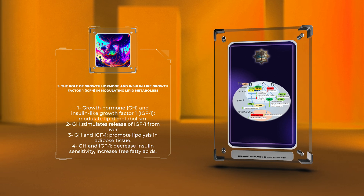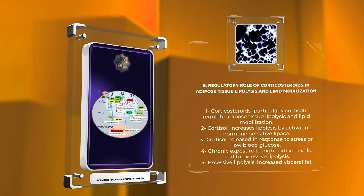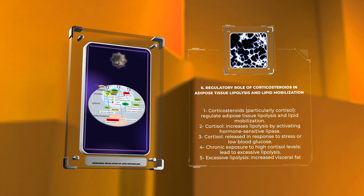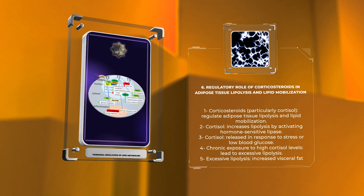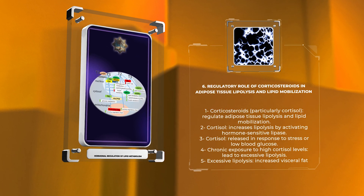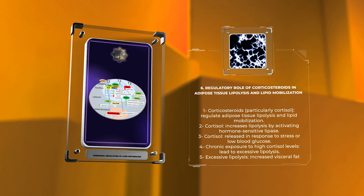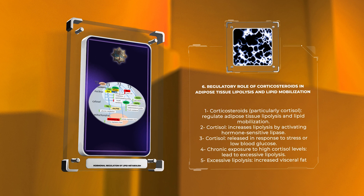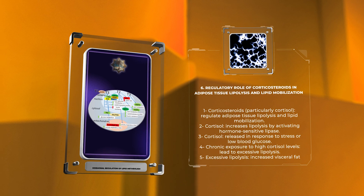Regulatory role of corticosteroids in adipose tissue lipolysis and lipid mobilization. Now, let's focus on the regulatory role of corticosteroids in adipose tissue lipolysis and lipid mobilization. Corticosteroids, primarily cortisol, are essential hormones released by the adrenal glands in response to stress or low blood glucose. Cortisol increases lipolysis by activating hormone-sensitive lipase in adipose tissue, releasing fatty acids into the bloodstream. These fatty acids can then be utilized as an energy source during stressful situations or prolonged fasting. However, chronic exposure to high cortisol levels, such as in Cushing's syndrome, can lead to excessive lipolysis, resulting in increased visceral fat deposition and subsequent metabolic complications.